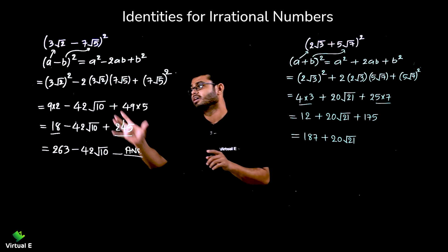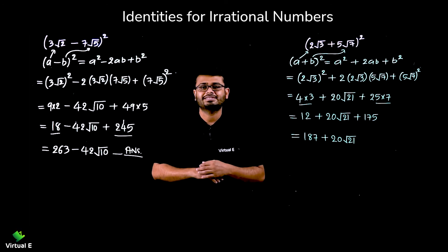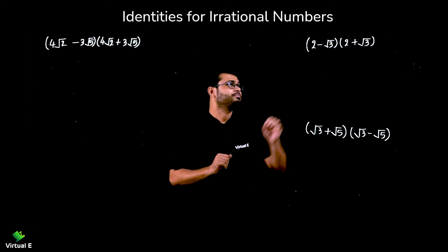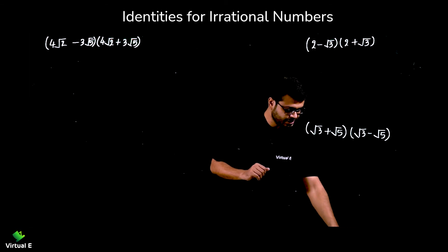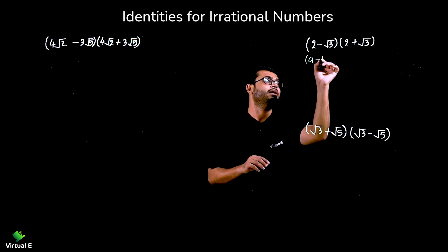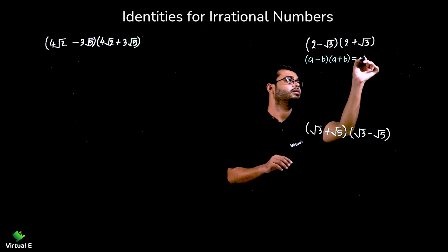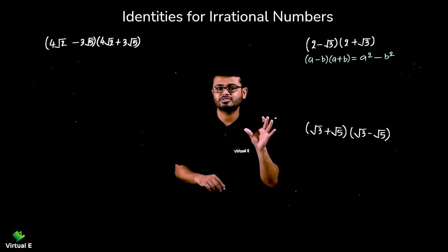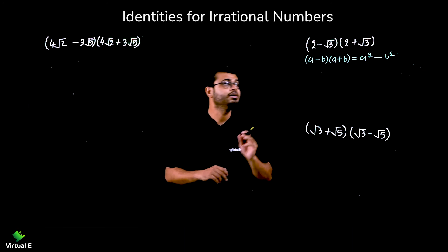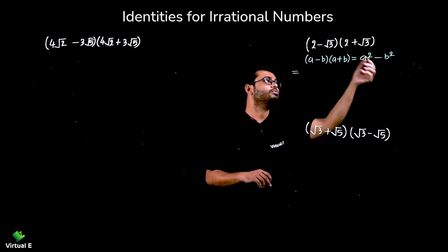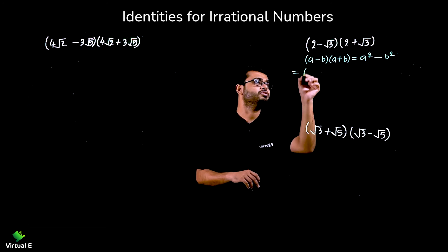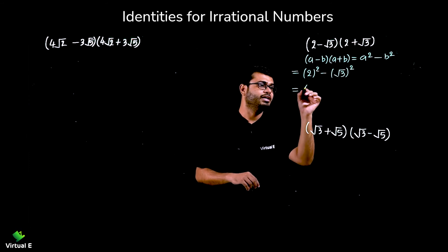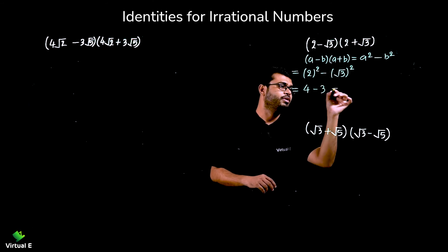So very simple — the only difference between the two identities is the sign: plus or minus. The method remains the same, but be careful while simplifying. Now let's discuss sums related to the next identity: (a - b)(a + b) = a² - b². For example, (2 - √3)(2 + √3): we get 2² - (√3)² = 4 - 3 = 1.